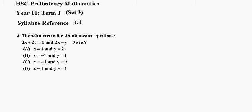What I'll do here is use the elimination method to work these out. First, let's set the equations up. I'll write this as 3x + 2y = 1, equation 1. Then 2x - y = 3, equation 2.